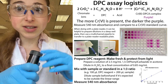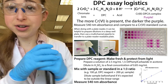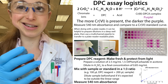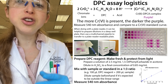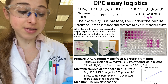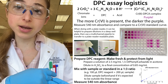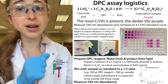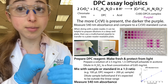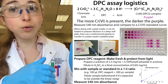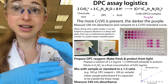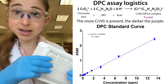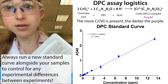You take that active DPC reagent — not just your plain DPC solution — and mix it with the sample you want to test for chromium. If you have a high amount of chromium, you'll need to dilute it. We pre-dilute our bacterial media samples to ensure the readings fall within the linear range of the assay, which we determine using the standard curve.